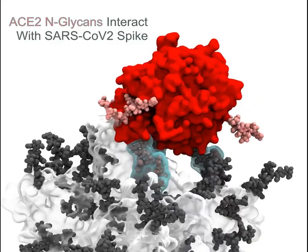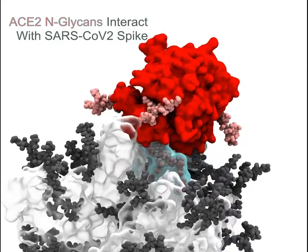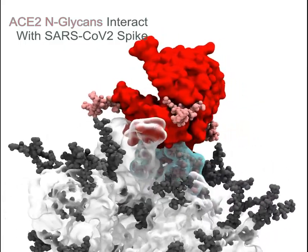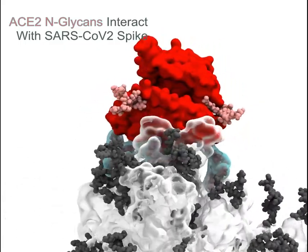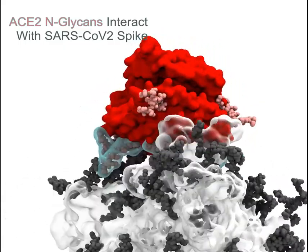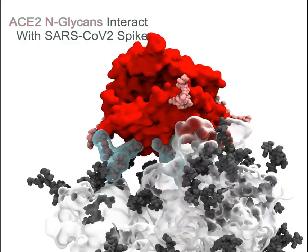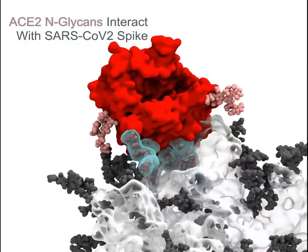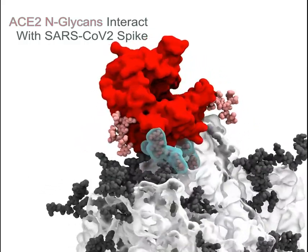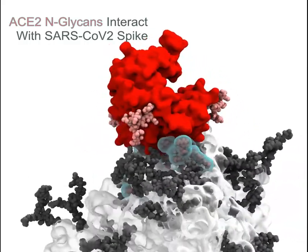Of particular interest, SARS-CoV-2 glycans on a glycosite with no corresponding site in SARS-CoV-1 interact with glycans on N546 of ACE2, a site removed in an ACE2 variant occurring in 3 out of 10,000 humans.